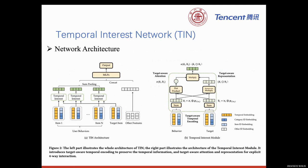In this paper, we propose a novel Temporal Interest Network, or TRN in short. It consists of three components: target-aware temporal encoding, target-aware attention, and target-aware representation. These three components work together to capture the quadruple semantic temporal correlation between behaviors and the target.